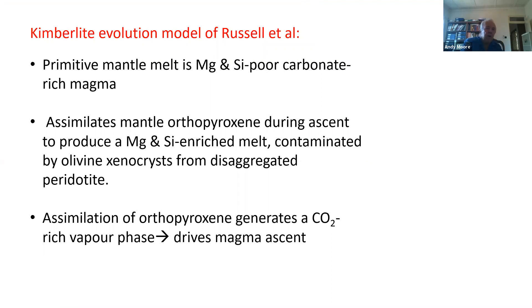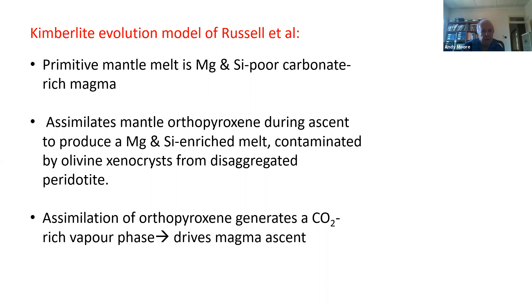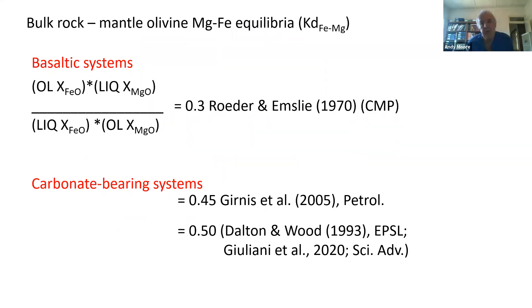Models for xenocrystic olivine derivation, such as those proposed by Russell and co-workers, suggest that primitive mantle melts are carbonate-rich and magnesium- and silica-poor. During ascent, the magma reacts with mantle peridotite, assimilates orthopyroxene, and the peridotites disaggregate, incorporating the disaggregated olivine xenocrysts. This process produces what we call kimberlite: a mixture of an original carbonate-rich magma, assimilated orthopyroxene, and incorporated disaggregated olivine xenocrysts. But questions can be raised about this model too.